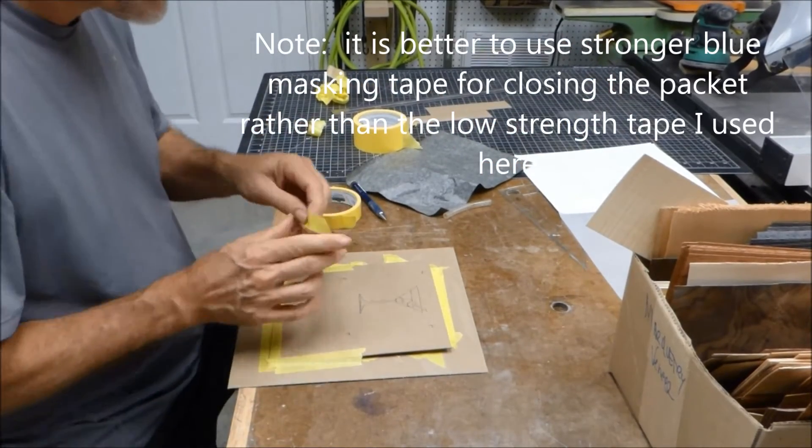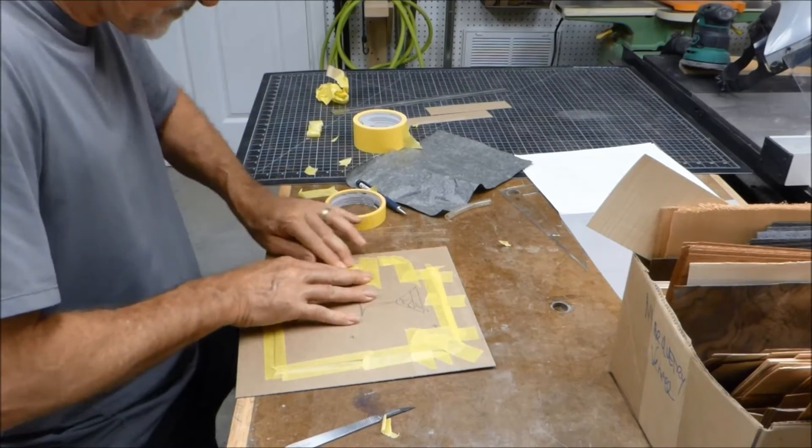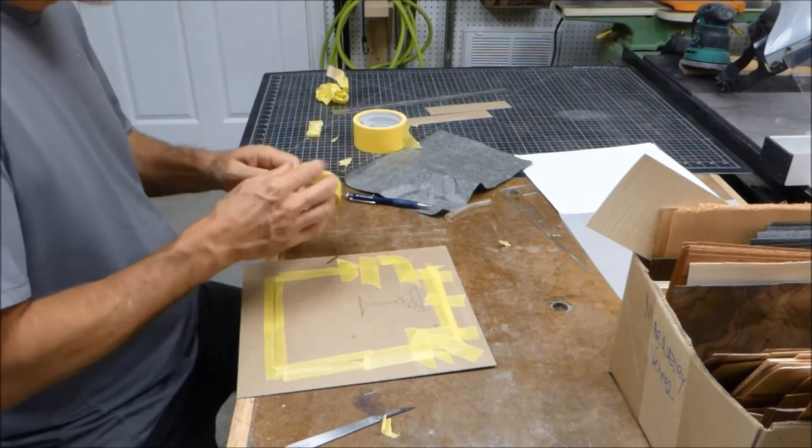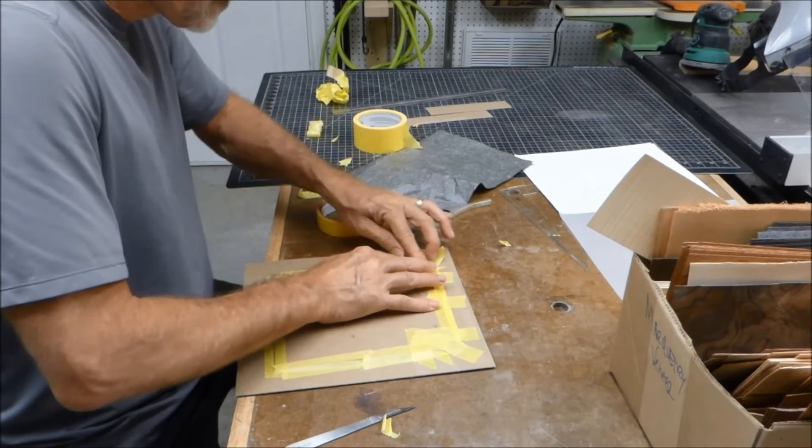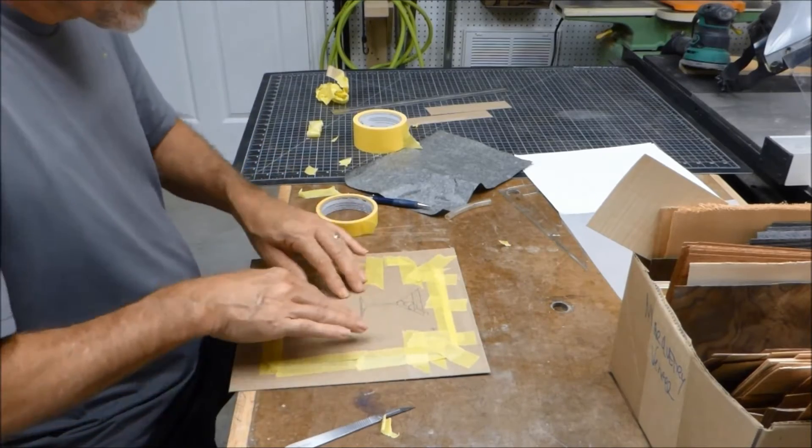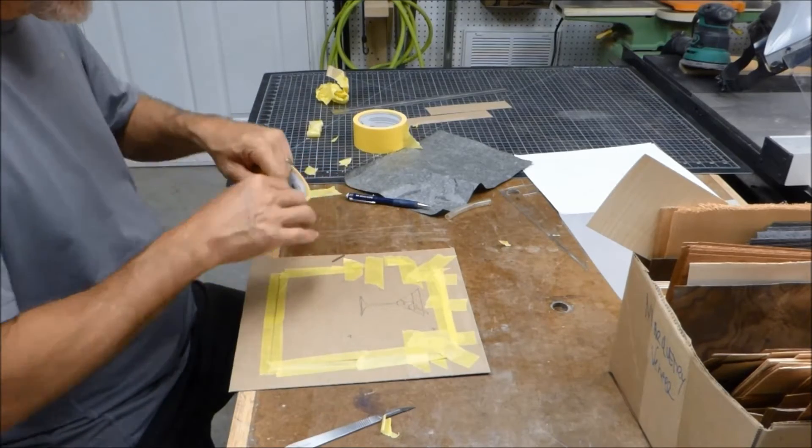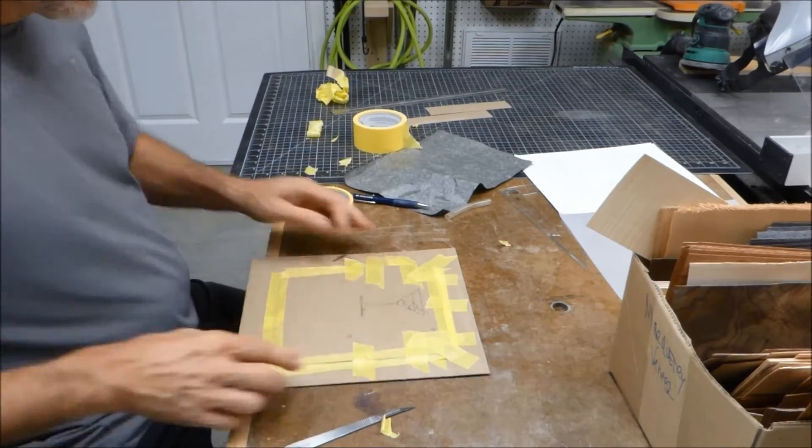One other thing to note here is that my top cardboard piece is smaller than the bottom. The standard approach is actually to have them both be the same time and wrap the tape around the edge, around to the back. The reason I stop doing that is once in a while, the tape can start peeling up, and it catches while you're cutting, and it can throw you off. So I started doing it this way. But either way can work.